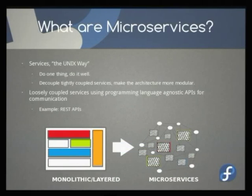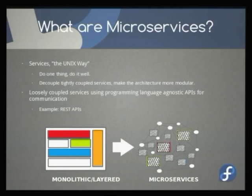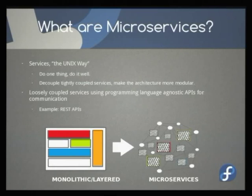So, services the Unix way — the Unix way being a giant quotation with huge air quotes around that, because you're going to get a different definition depending on who you talk to. However, I like to believe it as: you do one thing and you do it well. You can decouple previously tightly integrated components such that they are more loosely coupled, more interchangeable. As long as you comply with some kind of API standard, you can plug and replace different components.